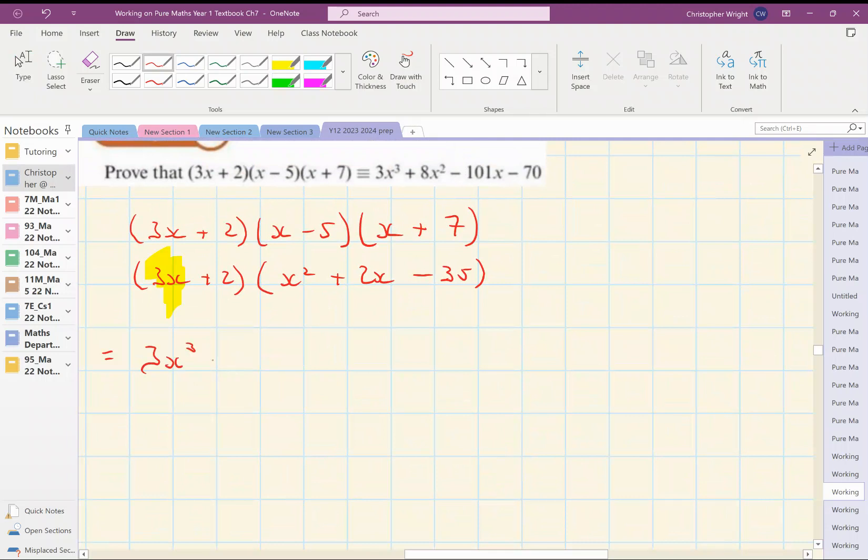3x times 2x, 6x squared. 3x times 35, it's minus 135. I'm sorry, minus 105x.